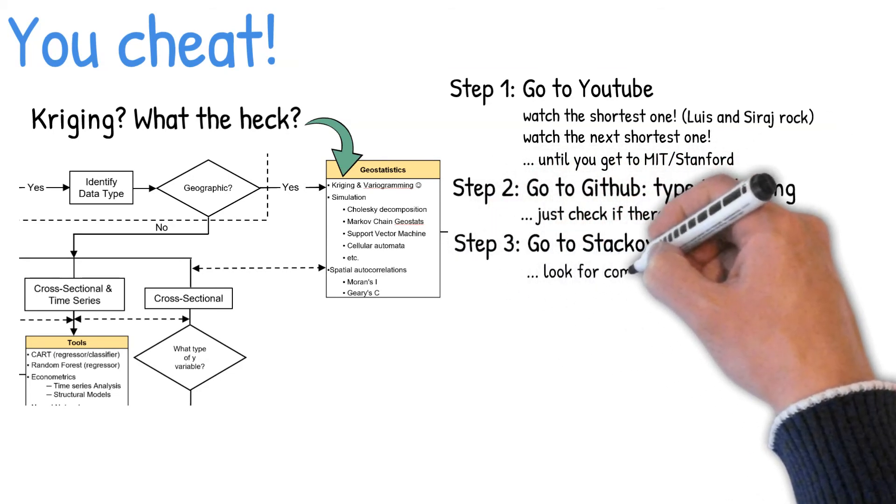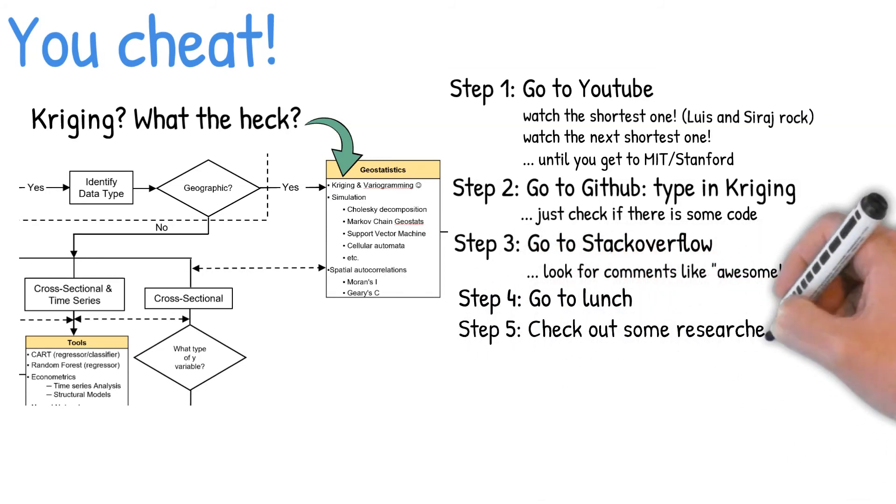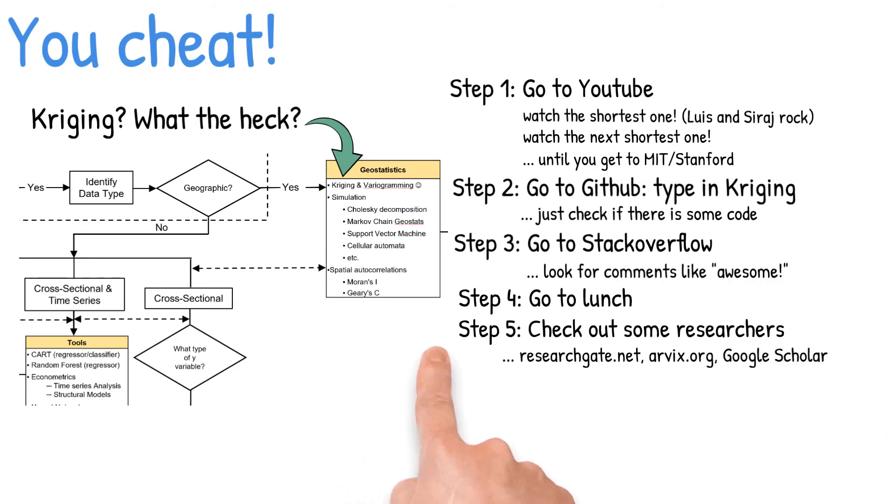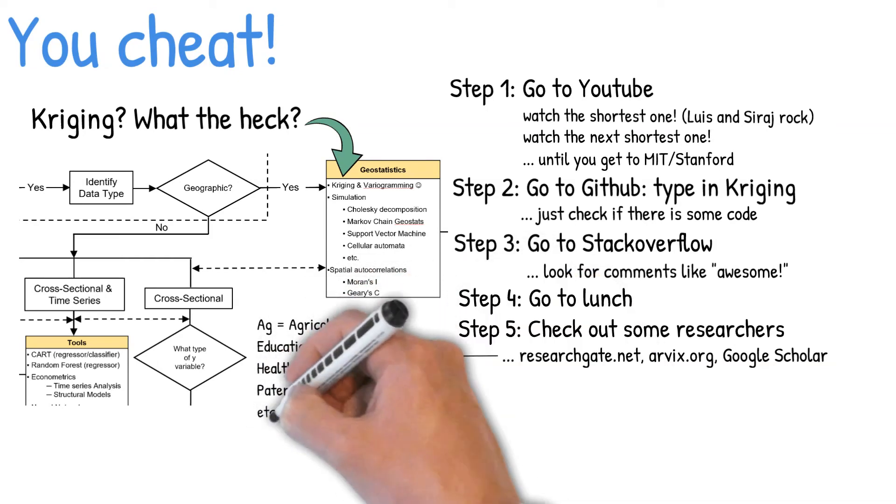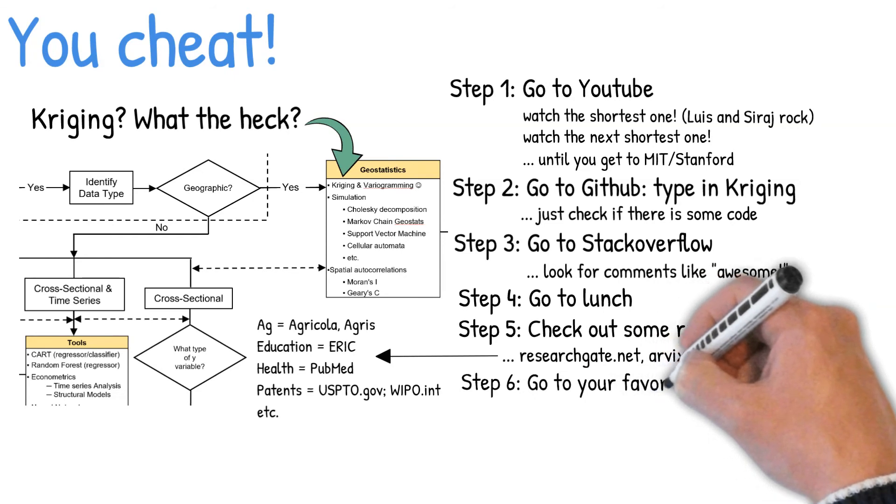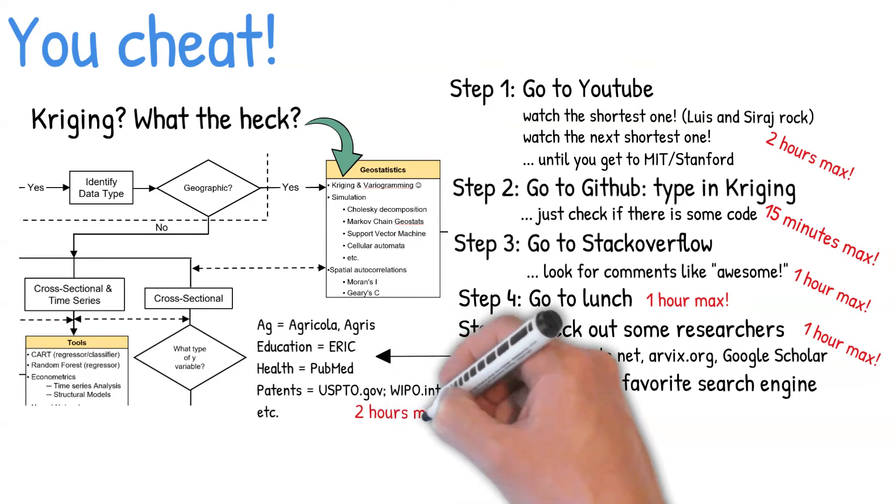Step three, you go to Stack Overflow. Go there and just type in the word Kriging, and find out if people are talking about what you learned on GitHub. Just see if people are friendly. So what's happened is you've spent from about nine o'clock in the morning to noon, and you've kind of gotten the basic vocabulary of the tool. When you get back from lunch, then what should you do? Maybe check out a few researchers. You might go into a database like researchgate.net or archive.org and try to understand who's researching this area. And then you go to your favorite search engine and you simply type in Kriging and Applications. Now you have the jargon that your machine learning people have.